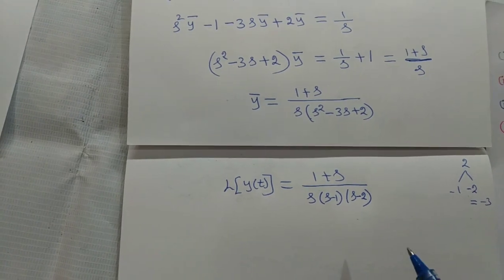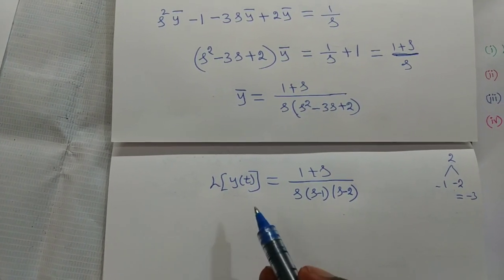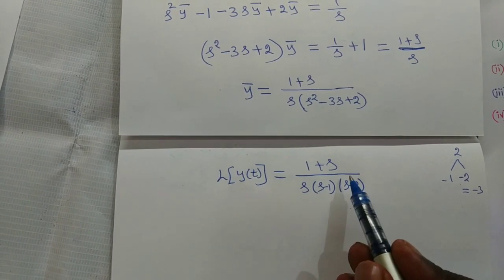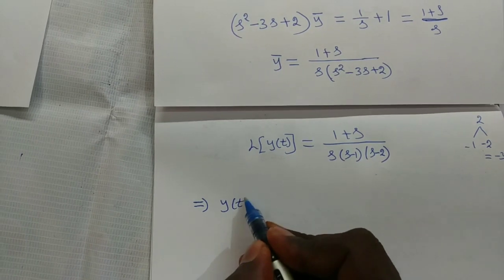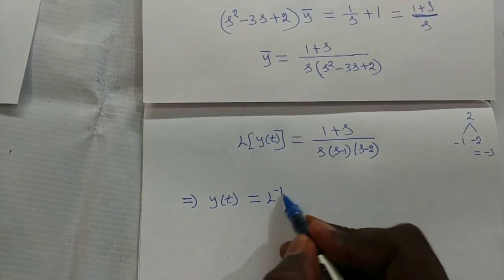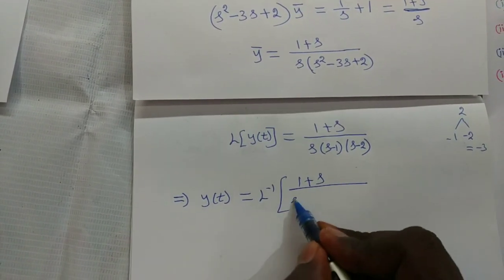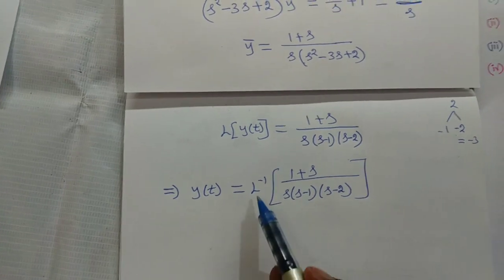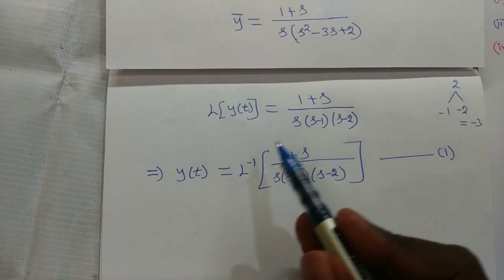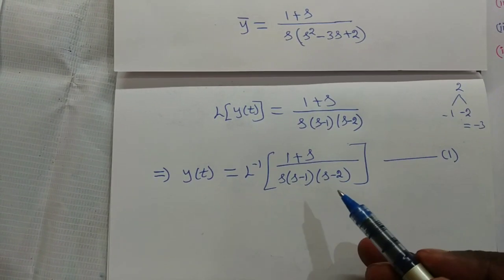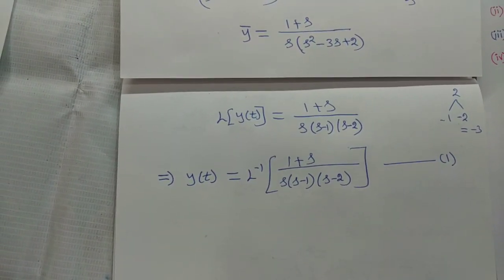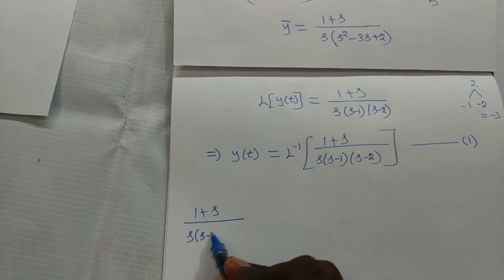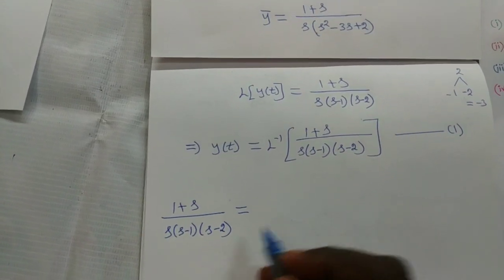The solution is y of t equal to the inverse Laplace transform of (1 plus s) divided by s(s minus 1)(s minus 2). To find this, we apply partial fraction method: (1 plus s) divided by s(s minus 1)(s minus 2) equals A by s plus B by (s minus 1) plus C by (s minus 2).